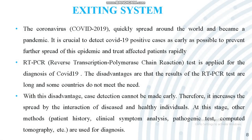In the existing system, only the Reverse Transcription Polymerase Chain Reaction (RT-PCR) test is applied for the diagnosis of COVID-19. The disadvantages are that results of the RT-PCR test take a long time, and some countries do not have sufficient capacity. With these disadvantages, case detection cannot be made early, which increases the spread through interaction of diseased and healthy individuals. At this stage, other methods like patient history, clinical symptom analysis, genetic testing, and computed tomography (CT) are used for diagnosis.